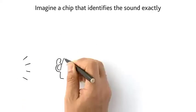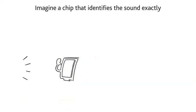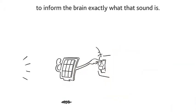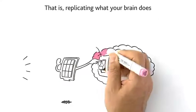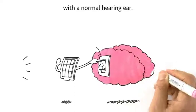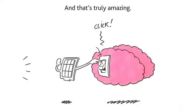Imagine a chip that identifies the sound exactly and switches on the sound processing automatically to inform the brain exactly what that sound is. That is, replicating what your brain does with a normal hearing ear. And that's truly amazing.